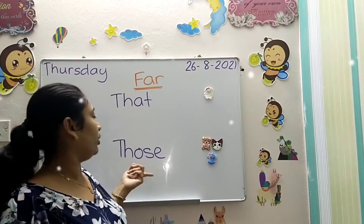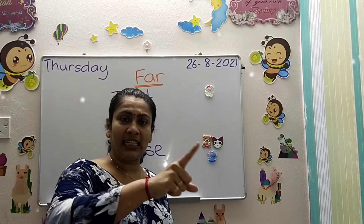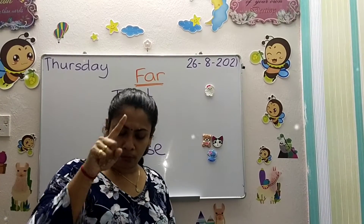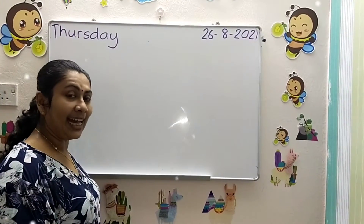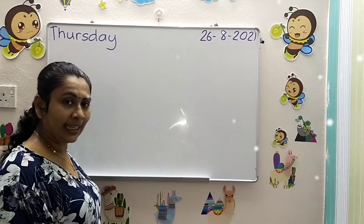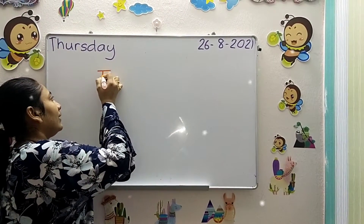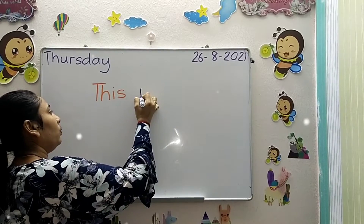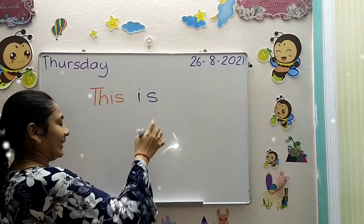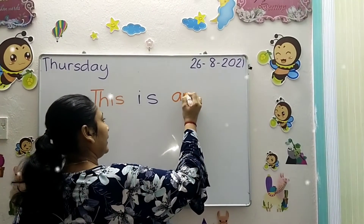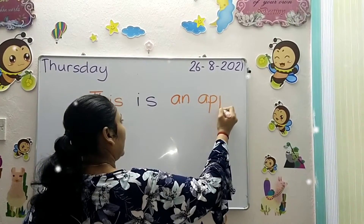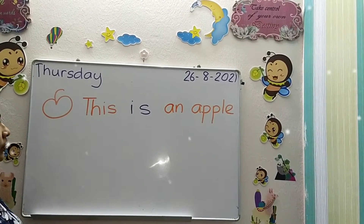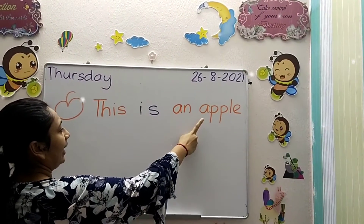Let's see how to construct a sentence using 'this.' 'This' follows by the word 'is.' This is an apple. How many apples do I have? One. So I use 'this is an apple.' 'This' — because there is one apple and it is near to me.